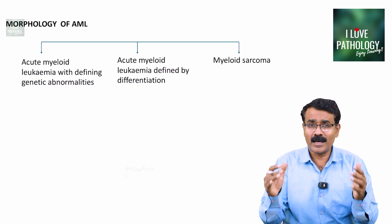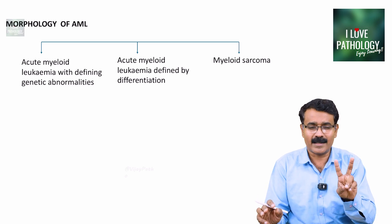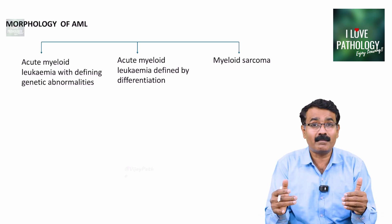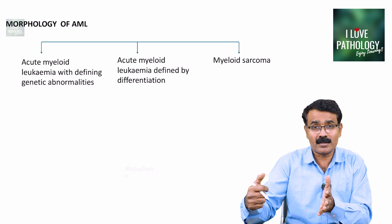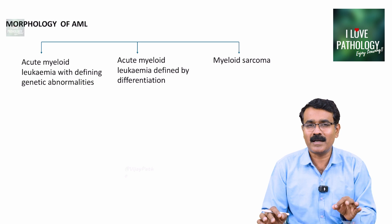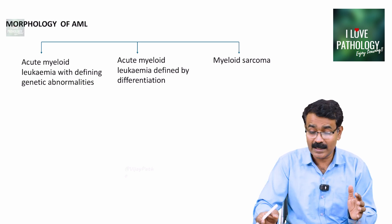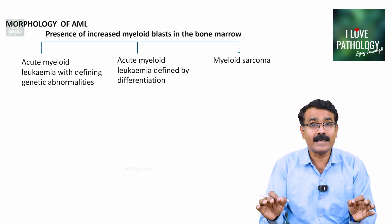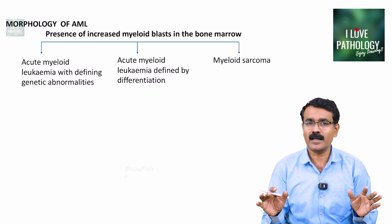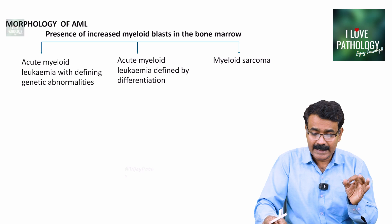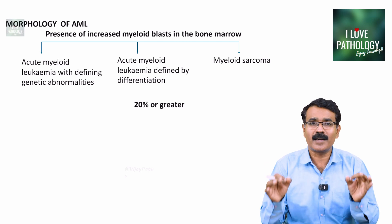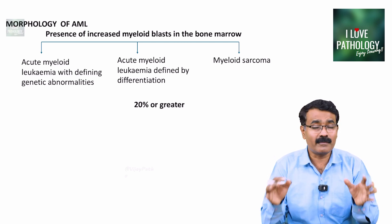Acute myeloid leukemia is categorized into two broad categories: AML with defining genetic abnormalities, and AML defined by differentiation. The third category, myeloid sarcoma, is a separate independent category. How do you diagnose AML on peripheral smear or bone marrow examination? It is by the presence of increased number of myeloid blasts — more than 20% blasts in the peripheral blood or bone marrow.